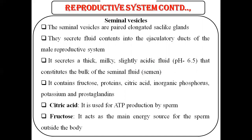That semen contains fructose, protein, citric acid, inorganic phosphorus, potassium, and prostaglandin. The citric acid is used for ATP production by sperm.